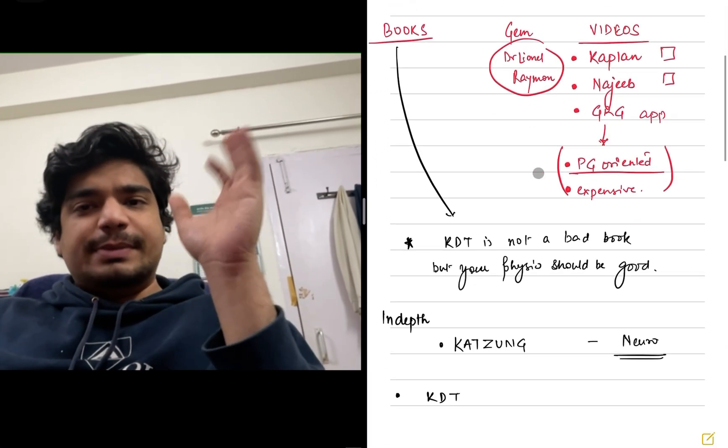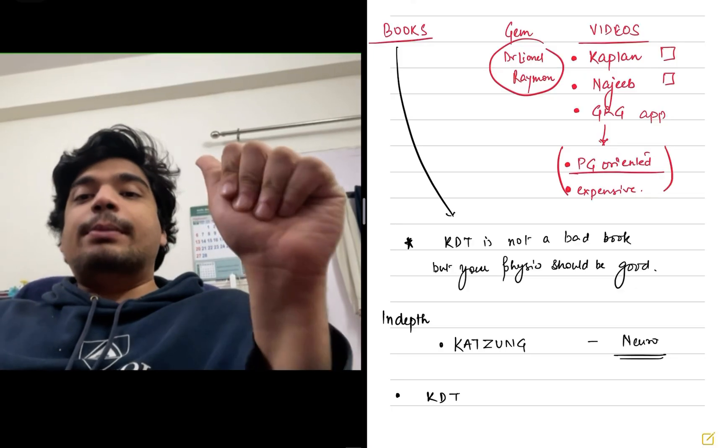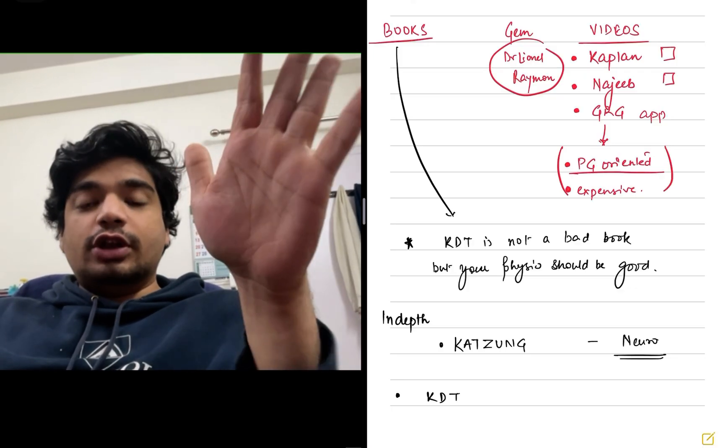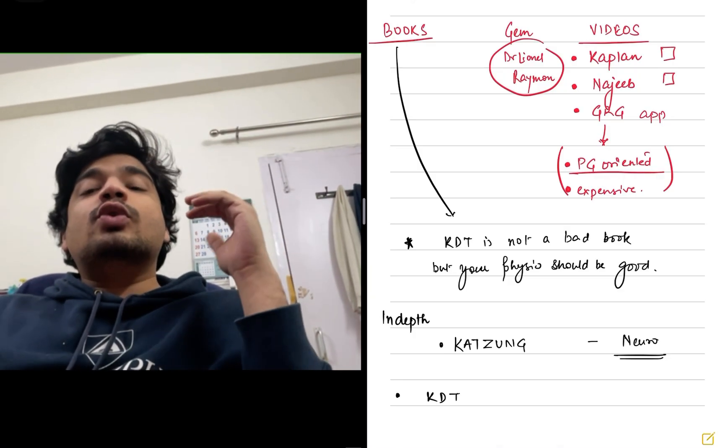Now coming to the books, I don't understand why people don't like KDT. KDT is a decent book. But KDT requires a good form for physiology knowledge. So KDT will only be helpful if you have a good physiology knowledge. Otherwise, you might find it tough to understand pharmacology.